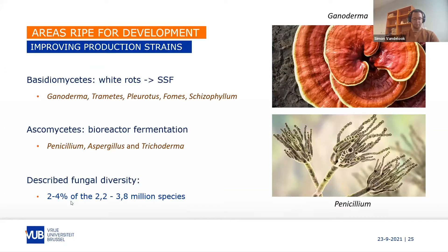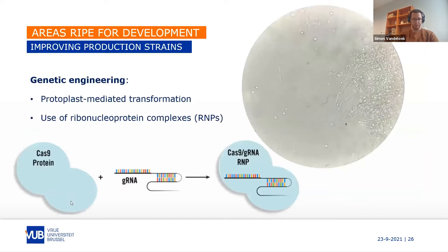In bioreactor fermentation you can also use white rot basidiomycetes, but certain popular ascomycete species already used for decades — like Penicillium, Aspergillus, or Trichoderma — can also be used for biomass generation. Besides the already described species, which represent probably only two to four percent of estimated existing fungal biodiversity, there are many unknown species that could provide new properties for future mycelium material applications.